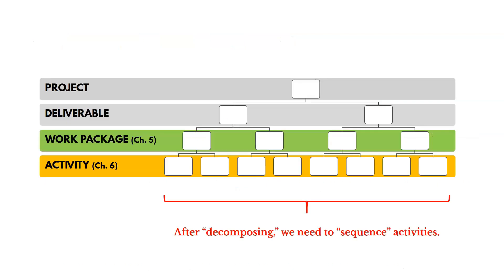This diagram from the previous chapter shows how we break out project work into deliverables, then into work packages, then into activities. Work packages are like nouns — for example, getting the roof installed. The steps or activities to get that done might be to hire a contractor, buy the materials, install the roof, test it for leaks, and so on. After we decompose the work into work packages and then activities, we have to put them in the right order — we have to sequence them.